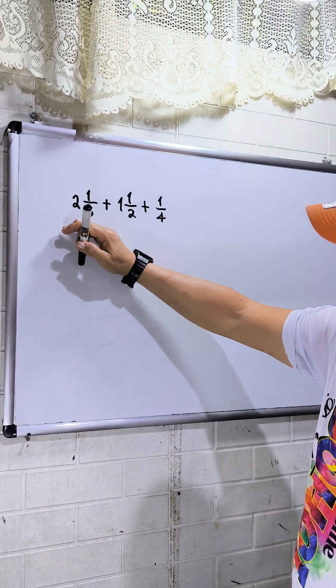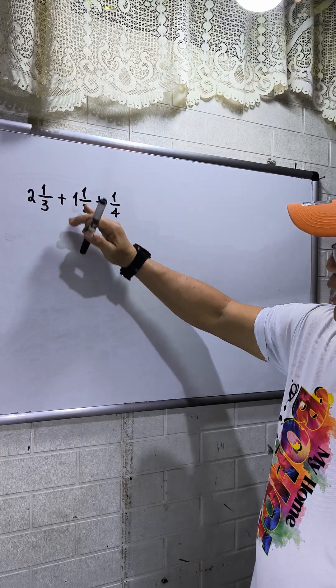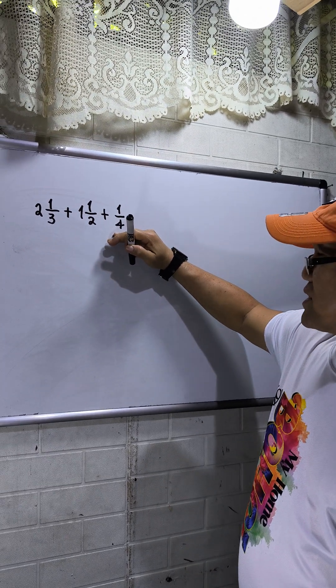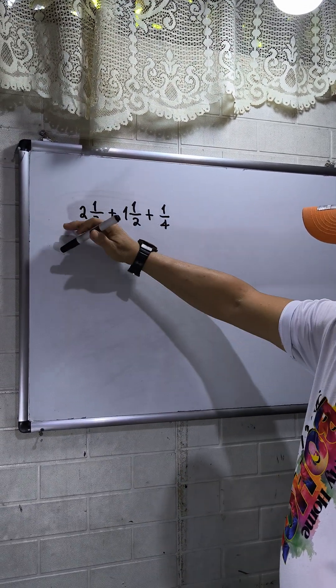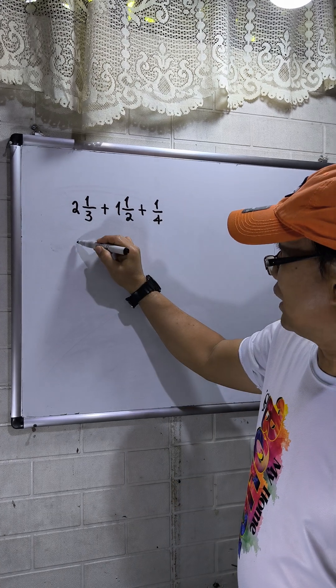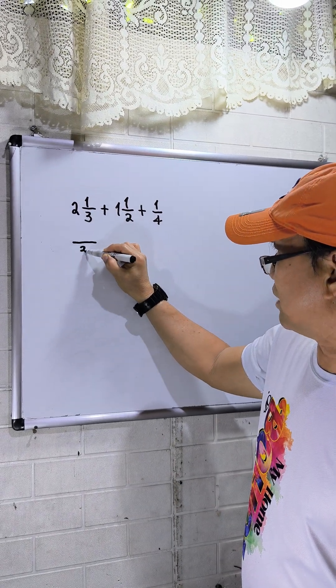I have here 2 1/3 + 1 1/2 + 1/4. For the mixed numbers, I will write first the denominator, that is 3, then this one will be 2, then I'll just write here 1/4 because no need to transform.